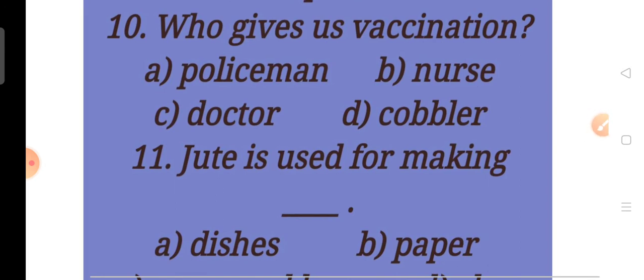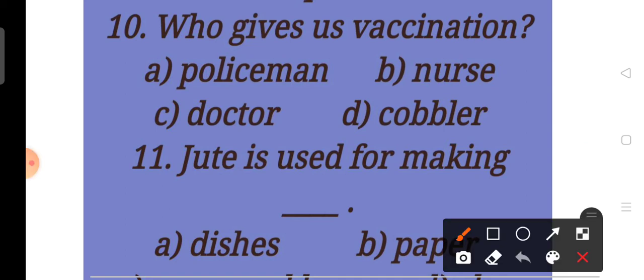Now move to question number 10. Who gives us vaccination? A. Policeman, B. Nurse, C. Doctor, D. Cobbler. Children, answer will be C. Doctor. A doctor gives us vaccination.